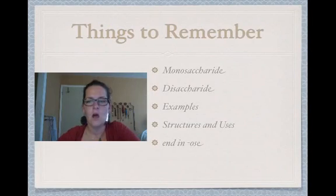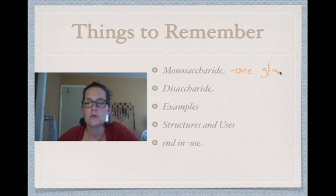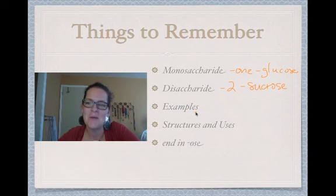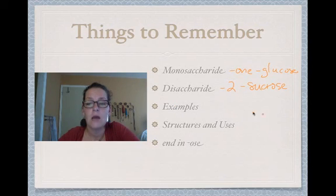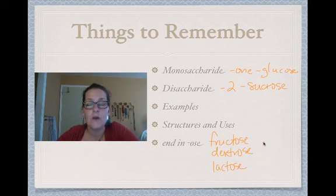Some things to remember from this first part of the carbohydrate video: monosaccharide means one unit, and an example is glucose; disaccharide means two units, and an example is sucrose; and polysaccharide means more than two. Examples ending in -ose include glucose, sucrose, fructose, dextrose, and lactose — which is the milk sugar. Don't forget to take the Quia quiz, jot down any questions, and I'll see you next class.